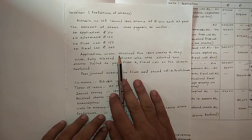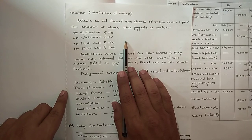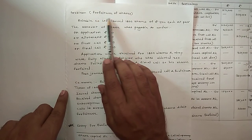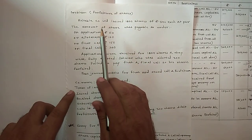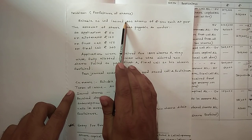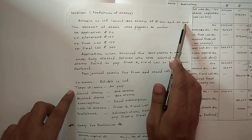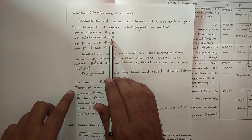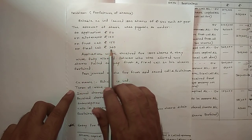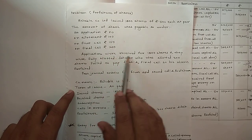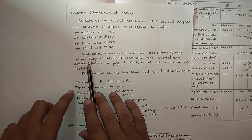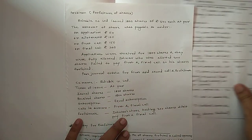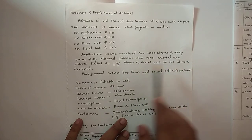Welcome students. Here is another problem on issue of shares, and the feature of this problem is shares are forfeited. I have written here 'Forfeiture of Shares.' Reliable Company Limited issued 1800 shares of rupees 500 each at par. The amount was payable as: on application rupees 50, on allotment rupees 100, on first call rupees 150, on final call rupees 200. Applications were received for 1800 shares and they were fully allotted. The shareholder who was allotted 300 shares failed to pay the first and final call, so his shares were forfeited.